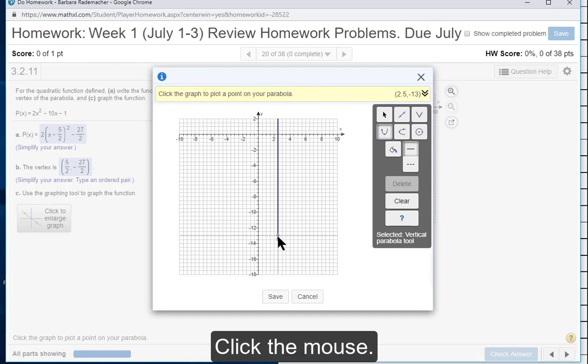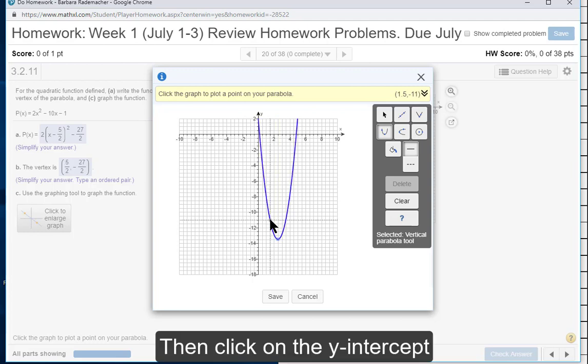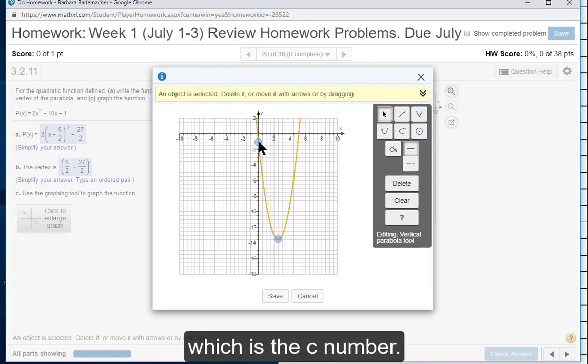Look at the upper right hand corner. It says 2.5 comma negative 13. Aha.